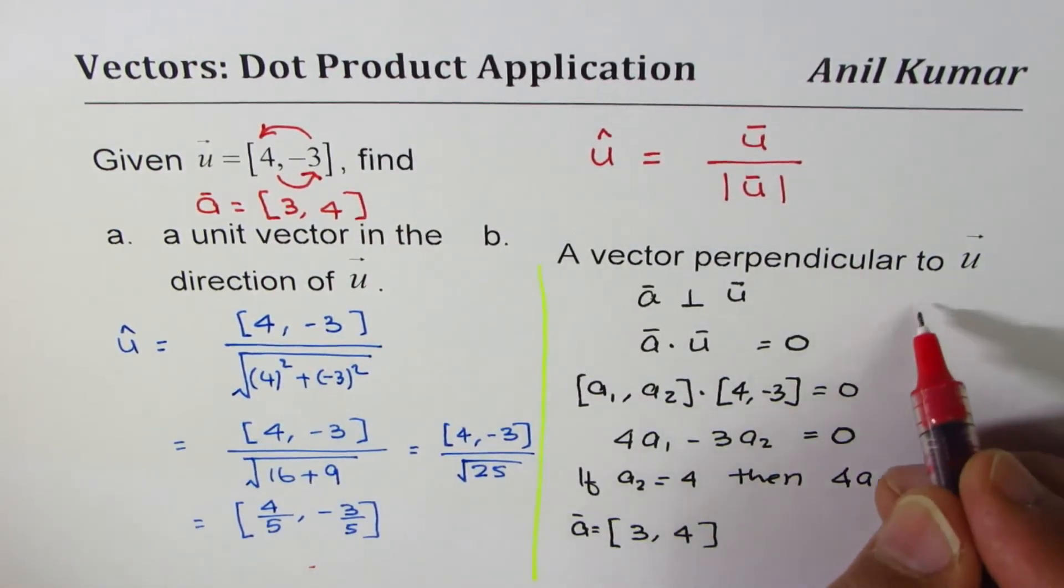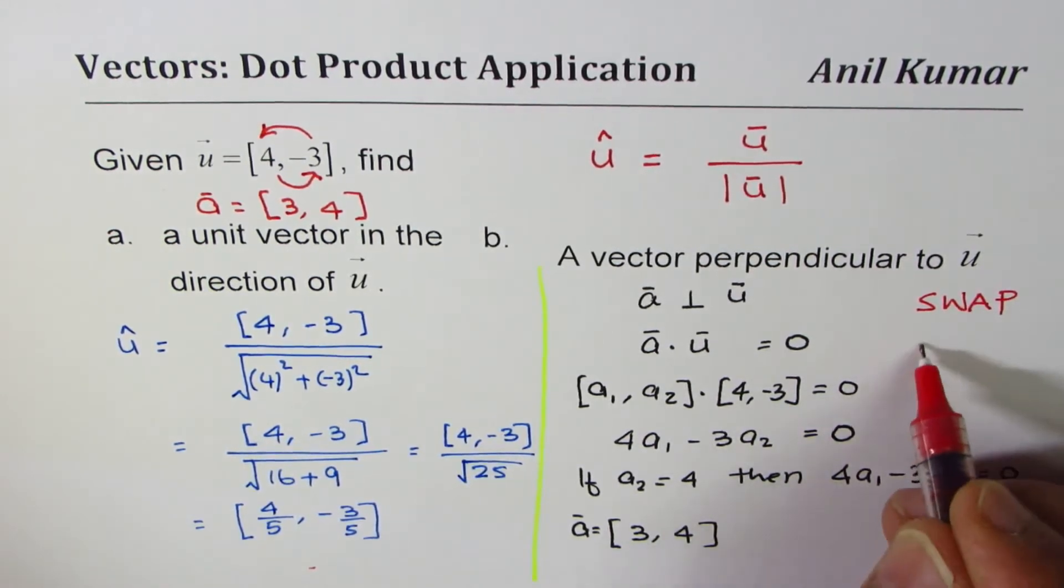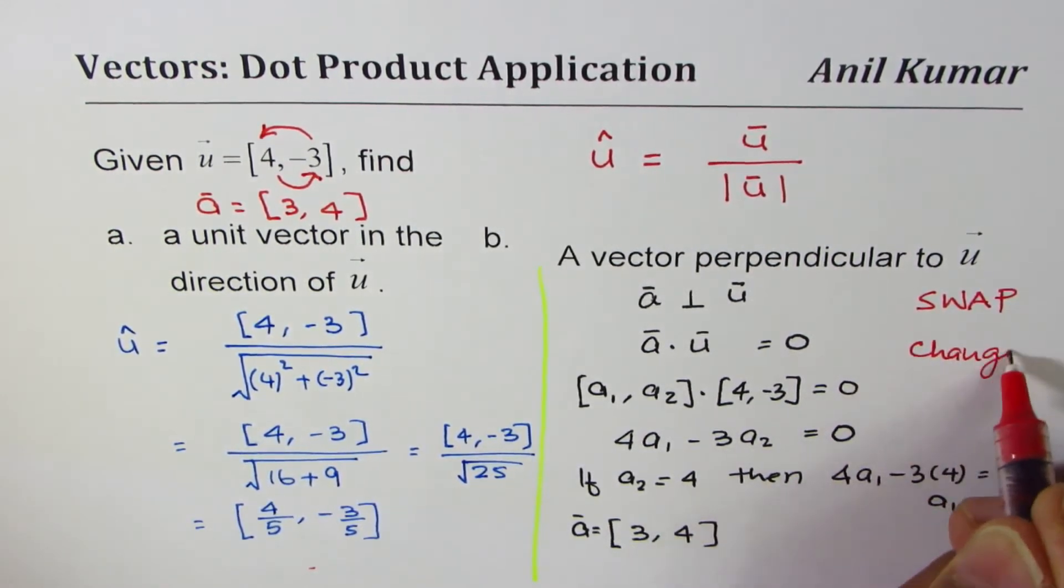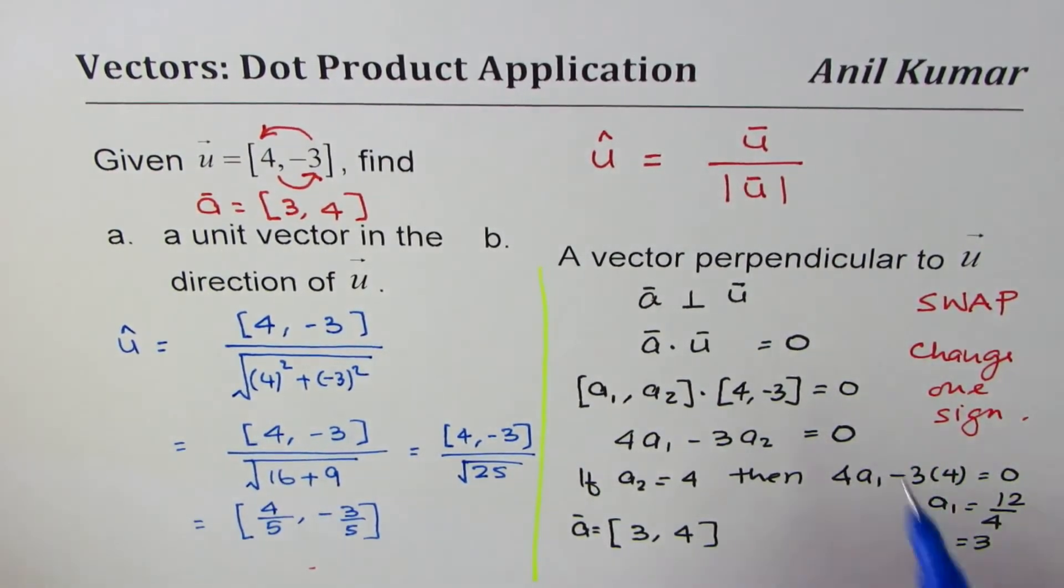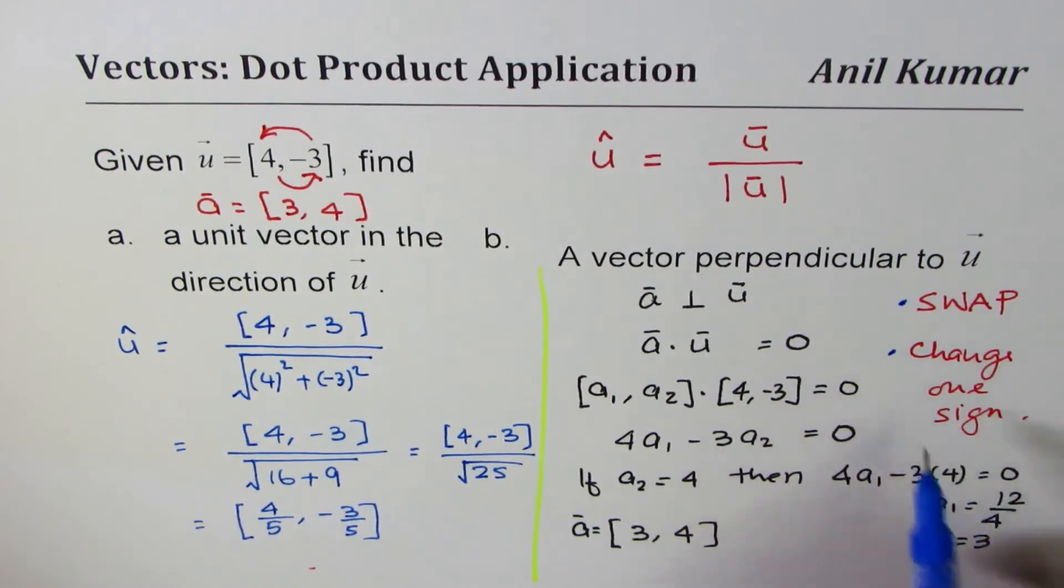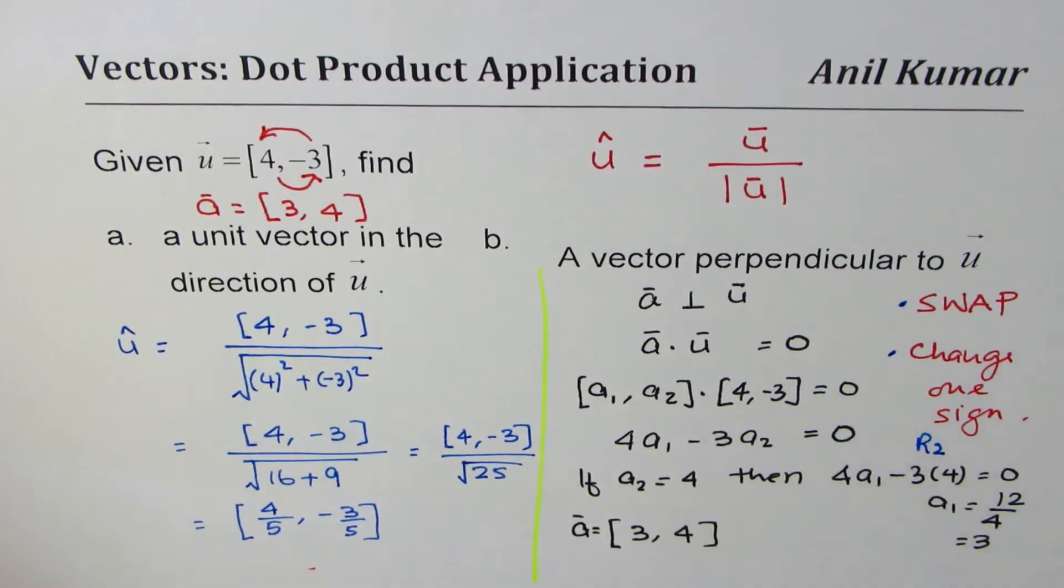Swap and change one sign. So the idea is: swap, then change one sign. These two steps can help you get a perpendicular vector in R².